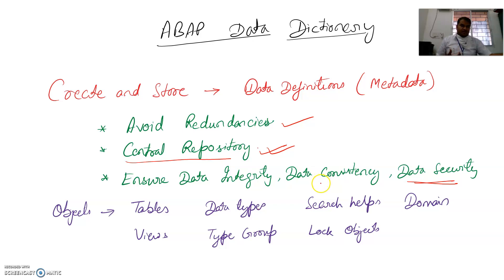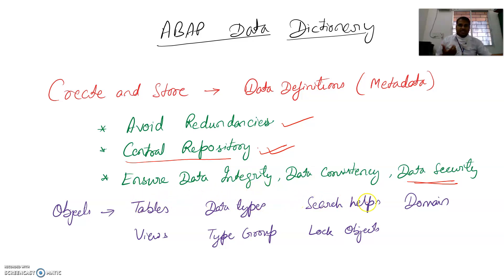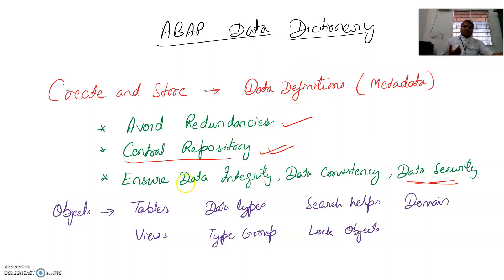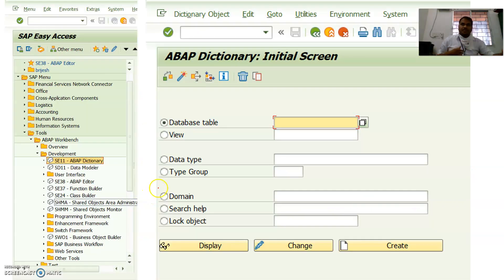The Data Dictionary also ensures data integrity and consistency — data will be secure and there will be no misplacement or errors. You can create different tables, data types, search helps, and domains as objects, keep them in a package, and all these objects will be stored in the ABAP Data Dictionary.